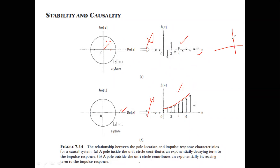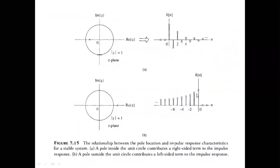For a non-causal system, the pole can be outside the unit circle. For example, 2^n · u(−n) is a decaying exponential; its ROC includes the unit circle even though the pole magnitude is 2. We are talking about systems which are both stable and causal, so there should be no confusion.